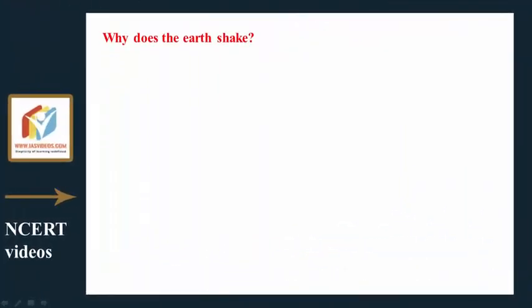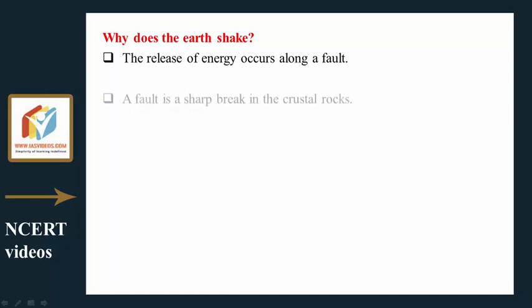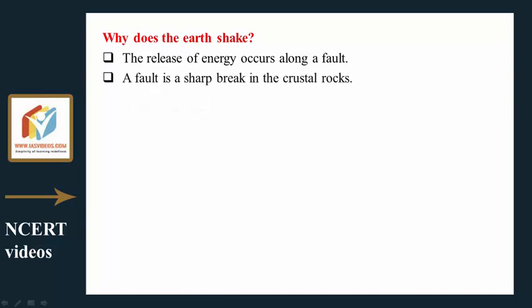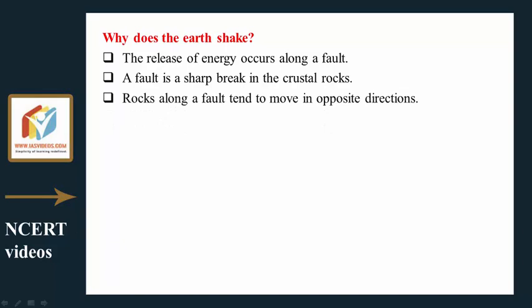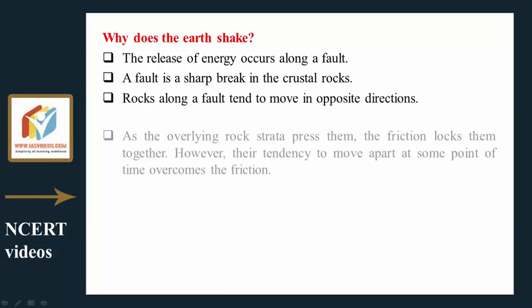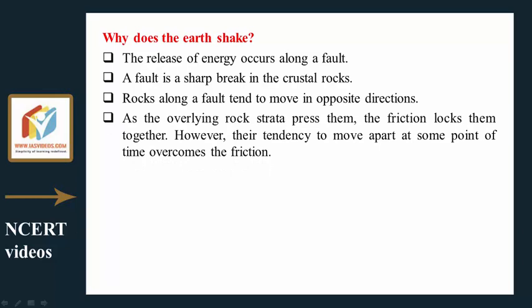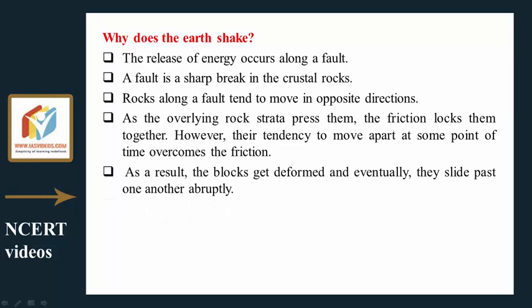Why does the earth shake? The release of energy occurs along a fault — a sharp break in the crustal rocks. Rocks along a fault tend to move in opposite directions. As the overlying rock strata press them, friction locks them together. However, their tendency to move apart at some point overcomes the friction, and the blocks get deformed and eventually slide past one another abruptly.